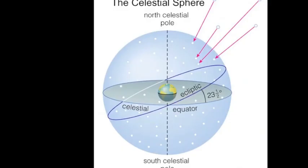The celestial sphere has a north pole called the north celestial pole — the projection of Earth's north pole onto the sphere. If you were standing at the north pole of the Earth and looked directly overhead, the north celestial pole would be there. Likewise at the south pole, you'd see the south celestial pole. Standing at the equator anywhere and looking overhead, you'd be beneath the celestial equator, which is Earth's equator projected out onto the celestial sphere.